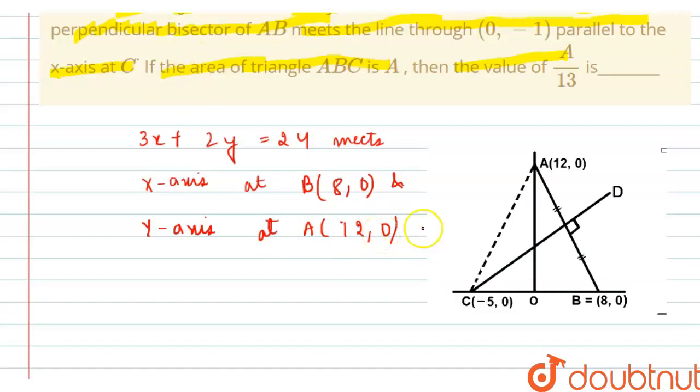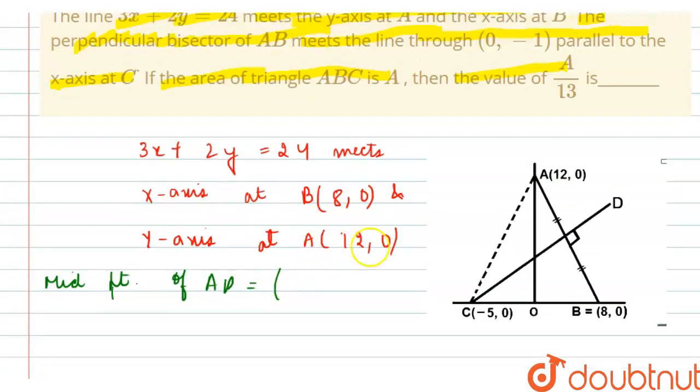Therefore, I am finding out the midpoint of AB. The midpoint of AB is equal to (8 plus 0) by 2, that is 4, and (0 plus 12) by 2, that is 6. There was a small error - it meets the y-axis at (0, 12). So this (4, 6) is the midpoint of AB.